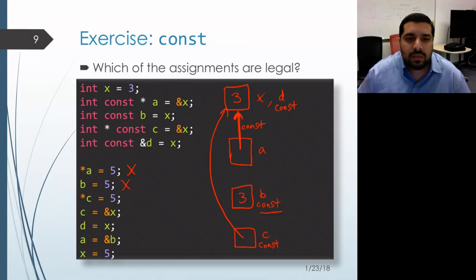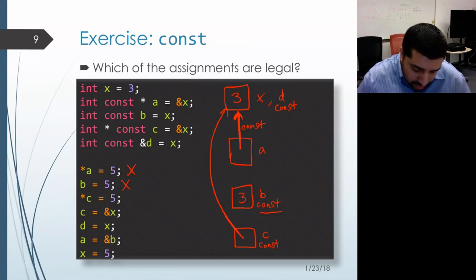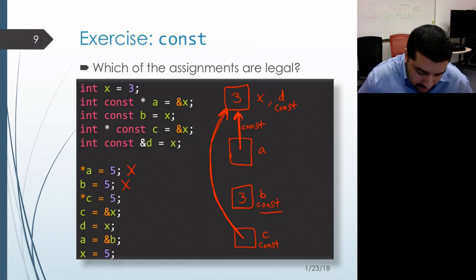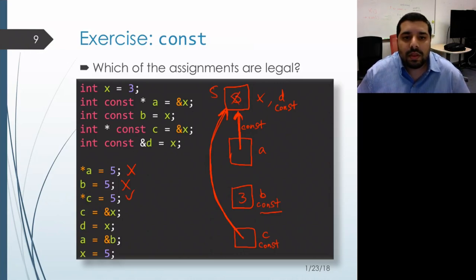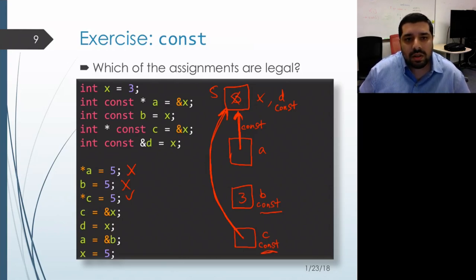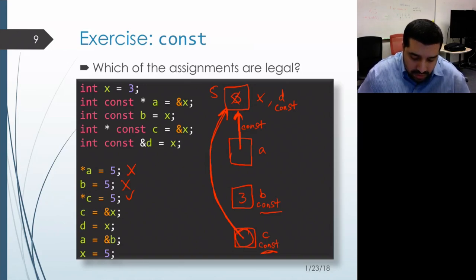On the next line, we dereference c to get to the object associated with x. We didn't encounter a constant along the way, which means we're actually allowed to modify that object. This will succeed and modify the contents of that object to be five. Then on the next line, we attempt to change the value stored in the c object itself. However, we declared c as const, which means we're not allowed to change the contents of that object, and so this assignment is prohibited.